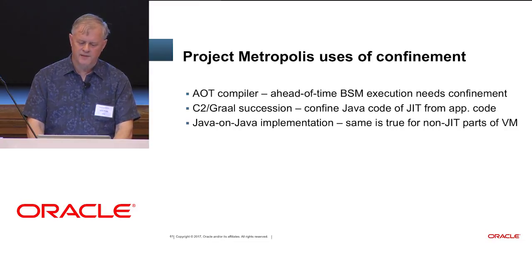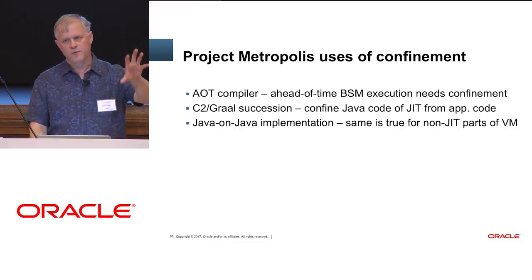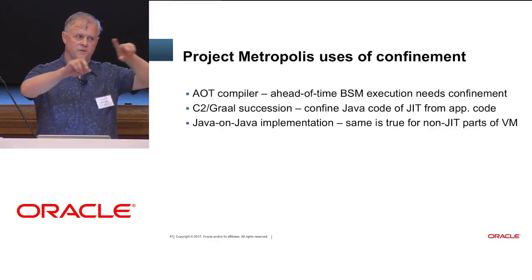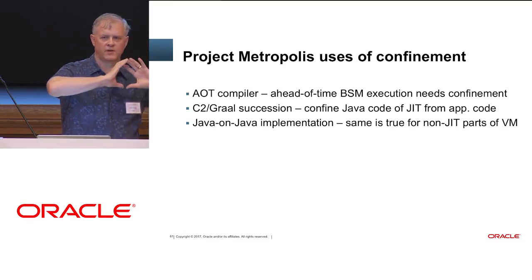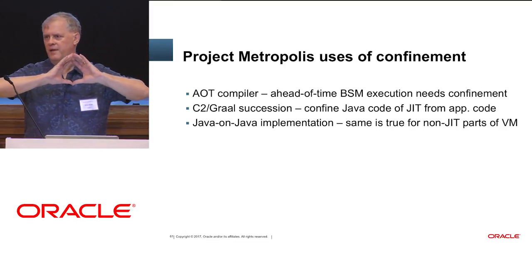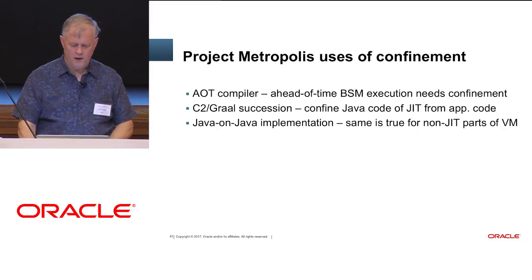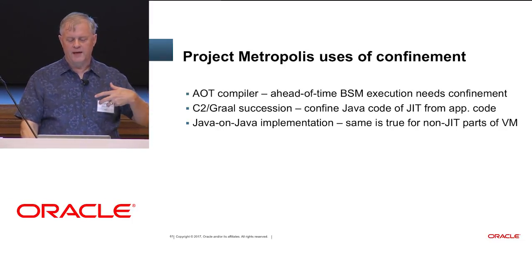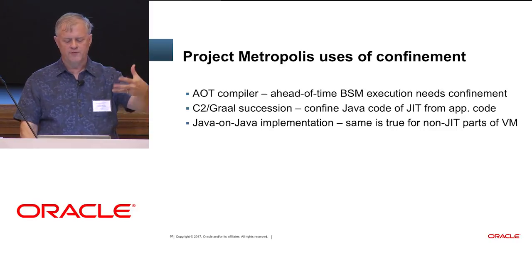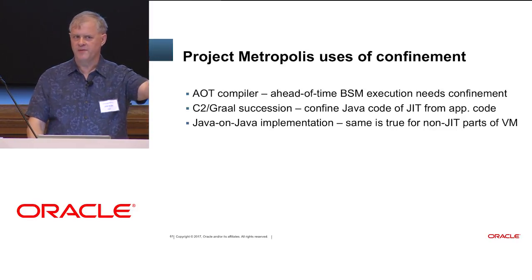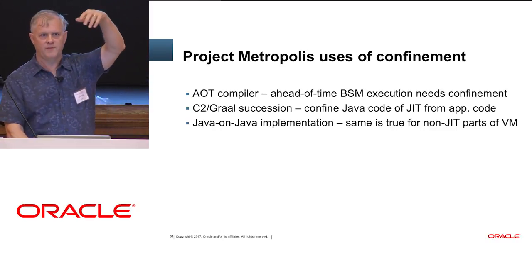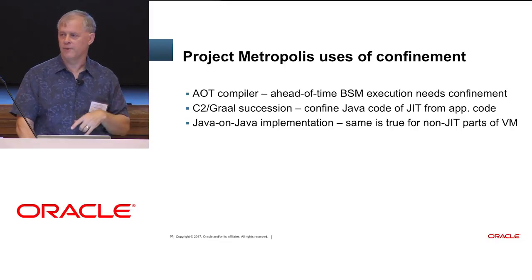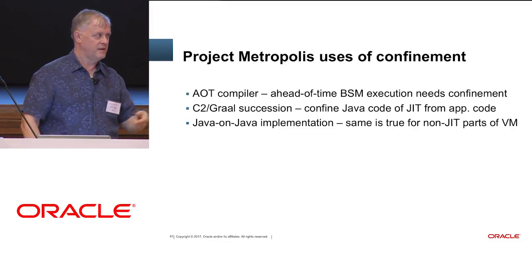Project Metropolis needs certain kinds of confinement. For example, if we're ever going to execute bootstrap methods ahead of time, we need to take those method handles and say: I can tell that you're safe to execute at compile time. That is a confinement problem. If we want to load Java code into the JVM and have it become part of the JVM, then that Java code needs to not interfere with the application Java code — for example, by causing GCs that are embarrassing. That is also a confinement problem, true not just for Graal but for any part of the VM we recode in Java.